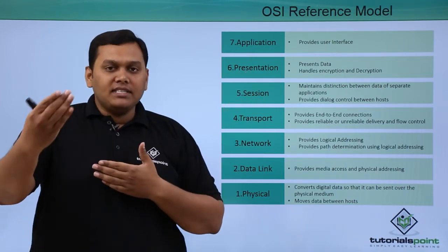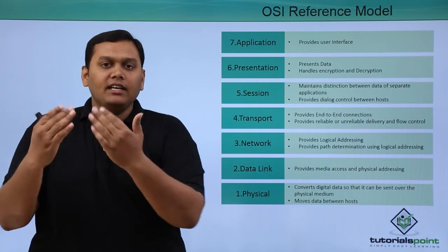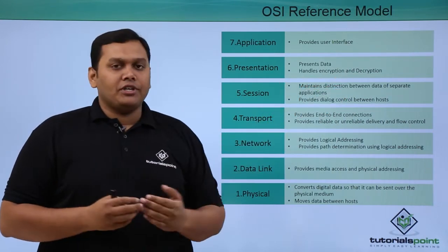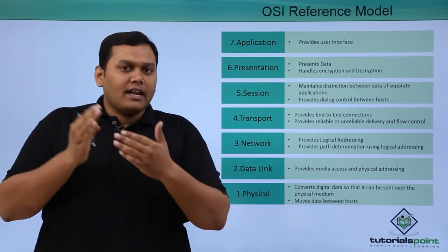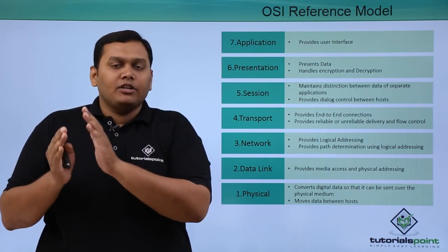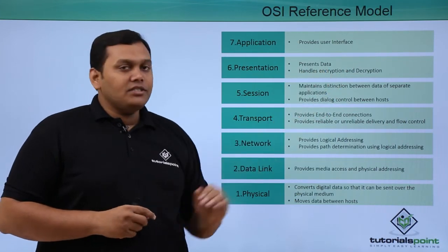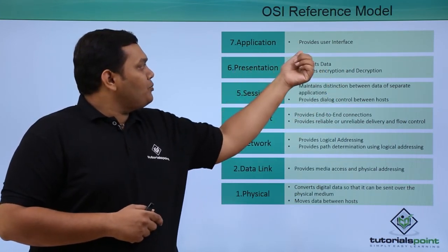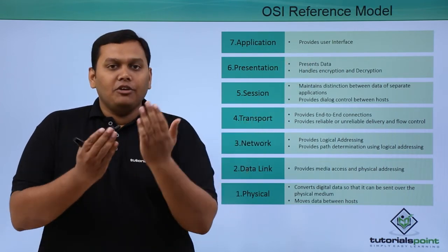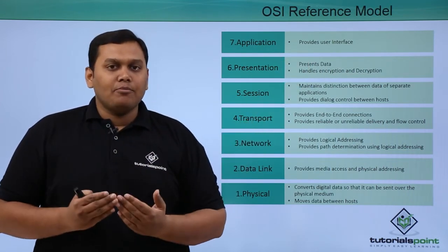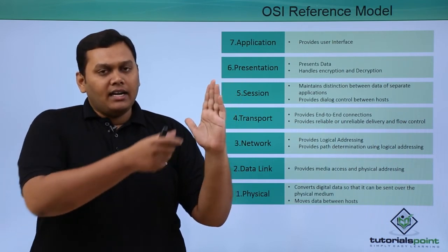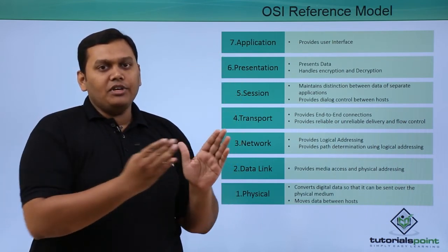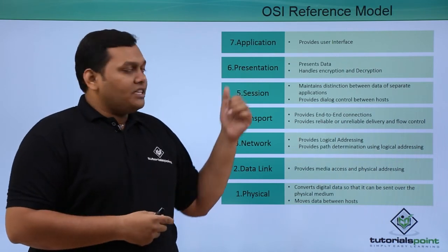The presentation layer presents the data — meaning the data is made visible on screen — and handles encryption and decryption. Before the data is transferred it gets encrypted, and here the decryption is performed. The final layer is the application layer, which provides the user interface. For example, an HR portal — we see the application's interface, and that interface has the details received through the presentation layer.